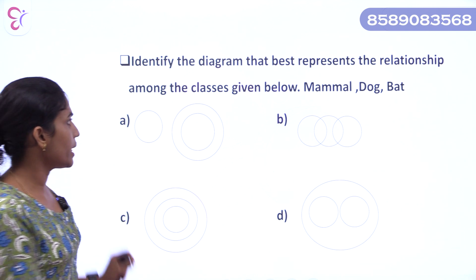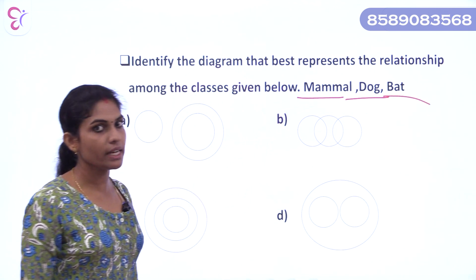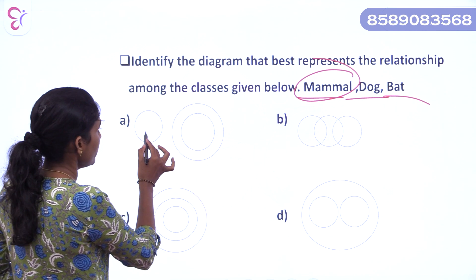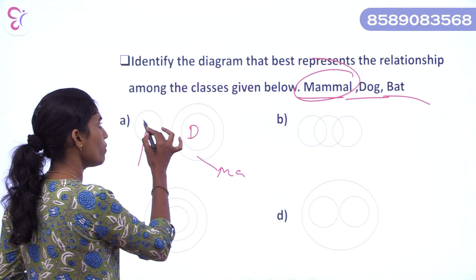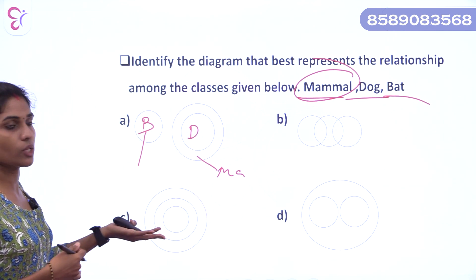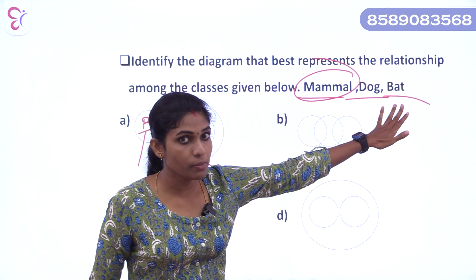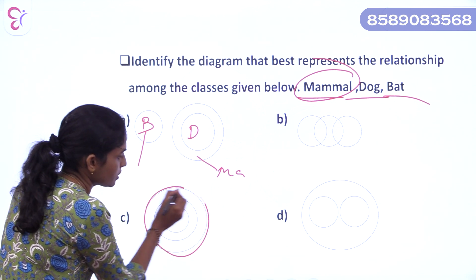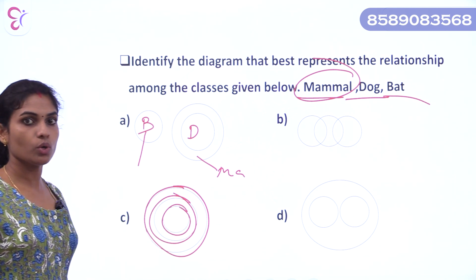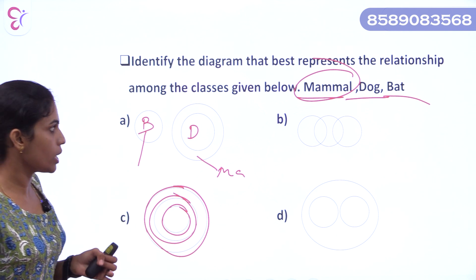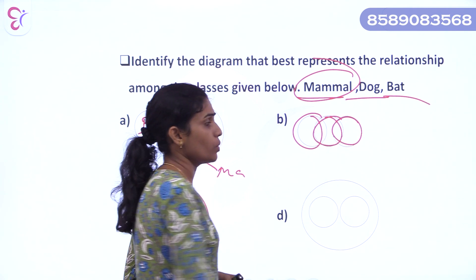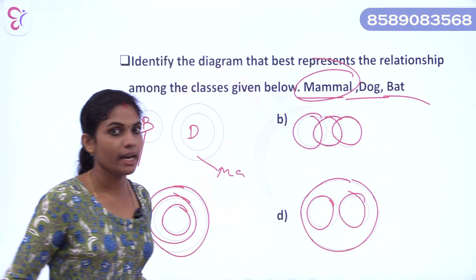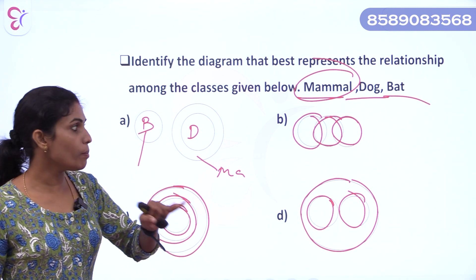Identify the diagram for: mammal, dog, bat. Dog and bat are both mammals. If you have a dog or a bat, you can see this is mammals, this is dog, this is bat. Dog and bat are separate circles inside mammals. The answer is Option D.